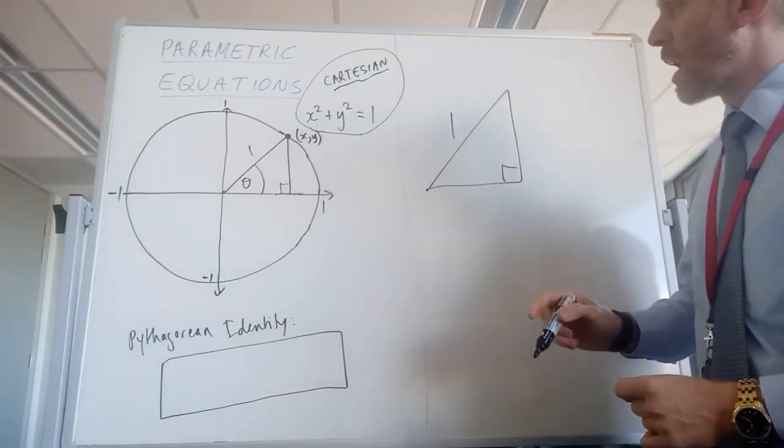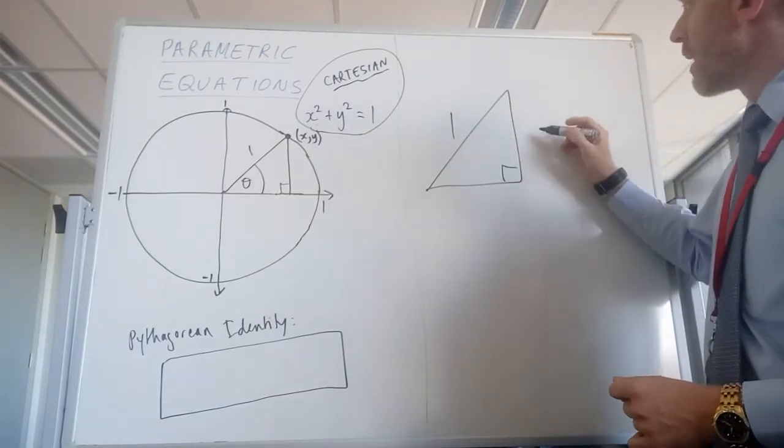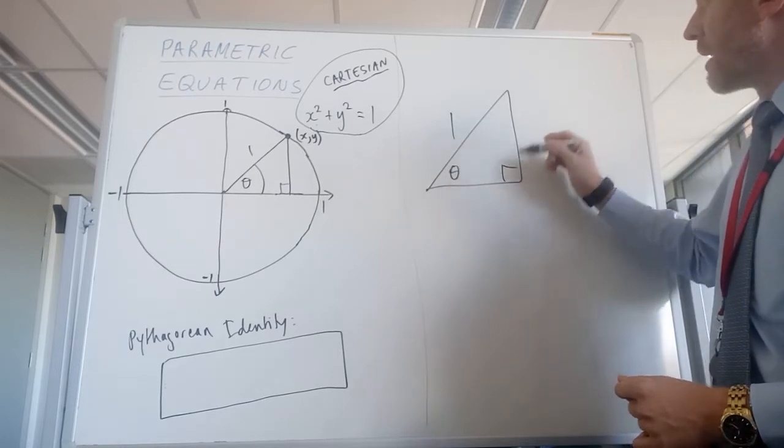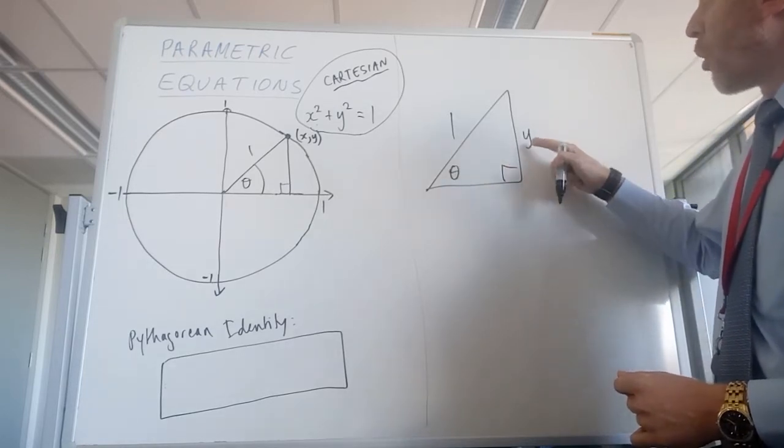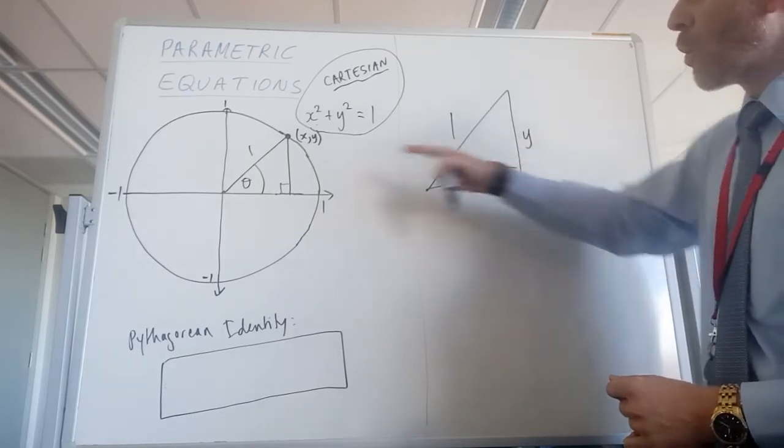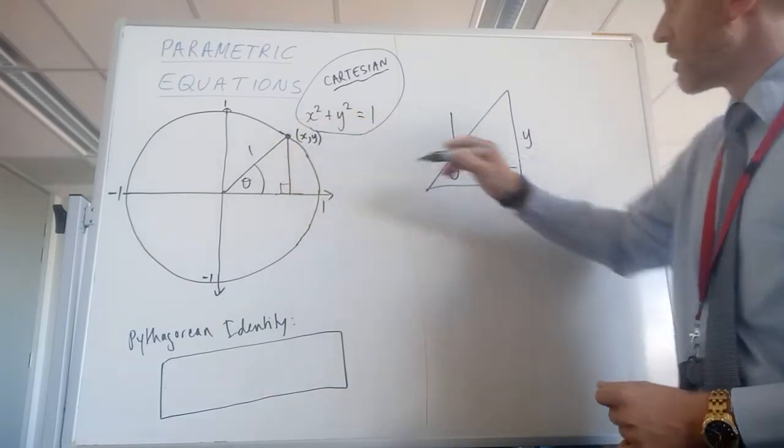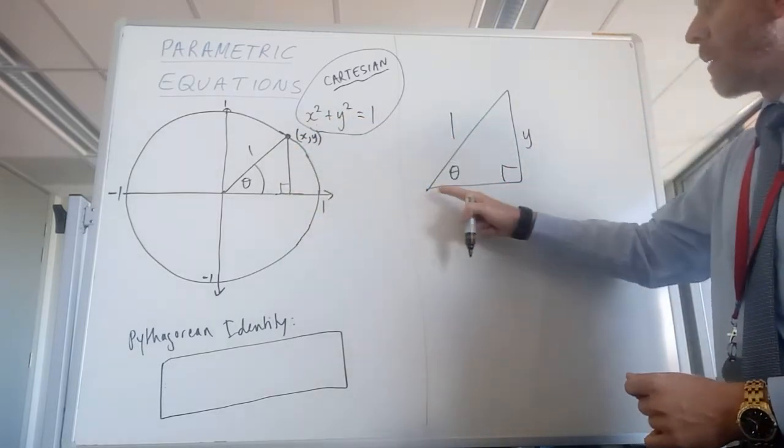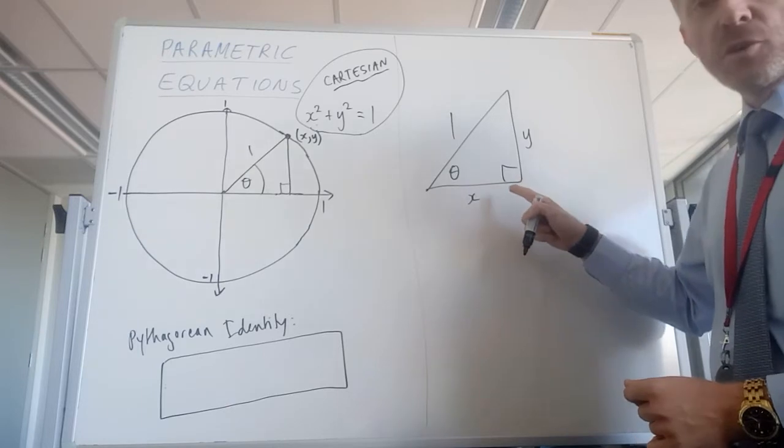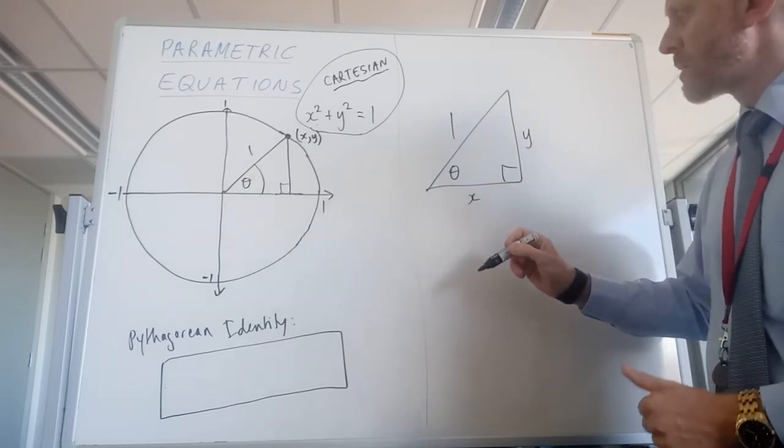It's got a radius of 1 or it's got a hypotenuse of 1. It's got the angle down there. It's got an opposite side of the angle, which I'm going to call y, because it's like the y coordinate, and it's got an adjacent side to the angle, which we'll call x.